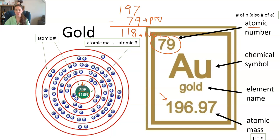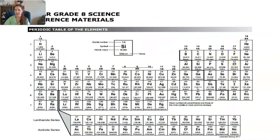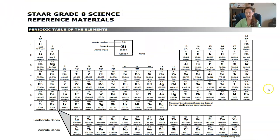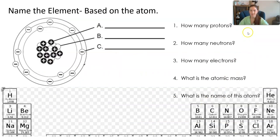We're going to do a couple more practice problems and then you'll be ready for your class. This is your star reference materials — the periodic table you need to get super familiar with. This is the one you'll see on your star test, and we'll be using it a lot in class. You can always Google a periodic table, but this is the one to use. Here we're going to try to name the element based on the atom that we see.